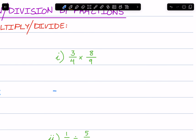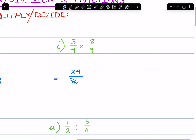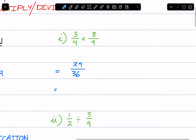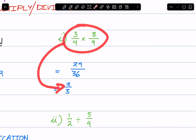For this one, top times top: 3 times 8 is 24. 4 times 9 — denominator times denominator — that becomes 36. From here we can simplify. The highest common factor between 24 and 36 is 12. So 24 divided by 12 is 2, and 36 divided by 12 is 3. This evaluates to 2 thirds.